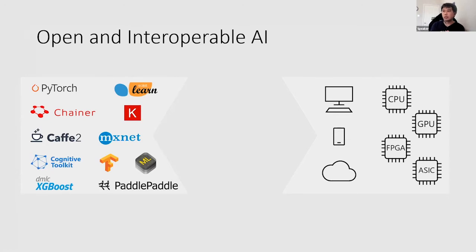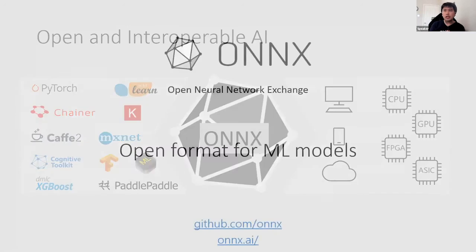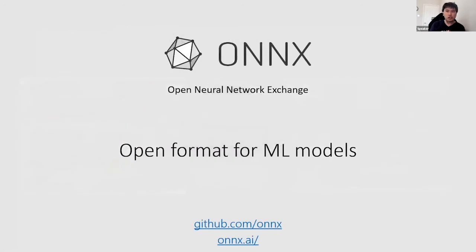There are different deployment targets — CPU or GPU, phone, cloud, or Internet of Things devices. That's what ONYX does: it's the bridge between the frameworks and the deployment side, whichever machine it would run on. ONYX stands for Open Neural Network Exchange. It's an open format for machine learning models, available on GitHub as open source.